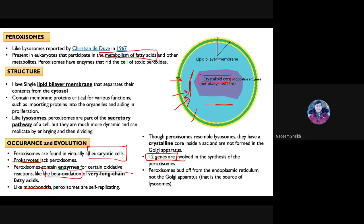Peroxisomes can be pinched from the center — from one peroxisome you may get two peroxisomes through binary fission. They are related to lysosomes but differ in sometimes having a crystalline core. Also, unlike lysosomal enzymes which are processed in the Golgi complex, peroxisomal enzymes are processed in the rough endoplasmic reticulum, from which the peroxisomes bud off ready to perform their function.